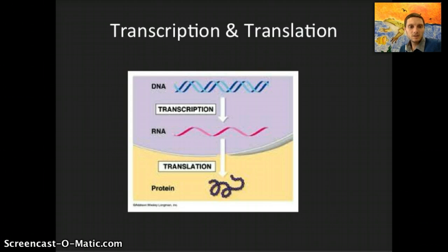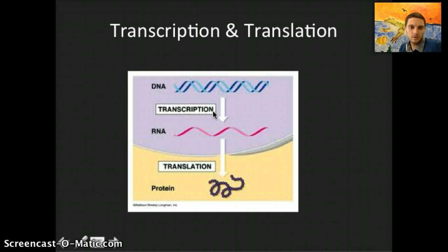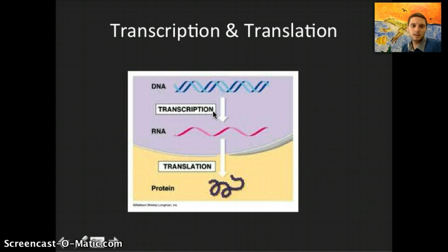Transcription takes place within the nucleus. The DNA never leaves the nucleus because it can very easily be mutated and needs to be protected, so it stays inside. During transcription, a copy of that DNA is made in the form of RNA — specifically mRNA or messenger RNA. Transcription is the process of making that messenger RNA; translation is the process of using that messenger RNA to make a protein, and we'll look at that in our next video.